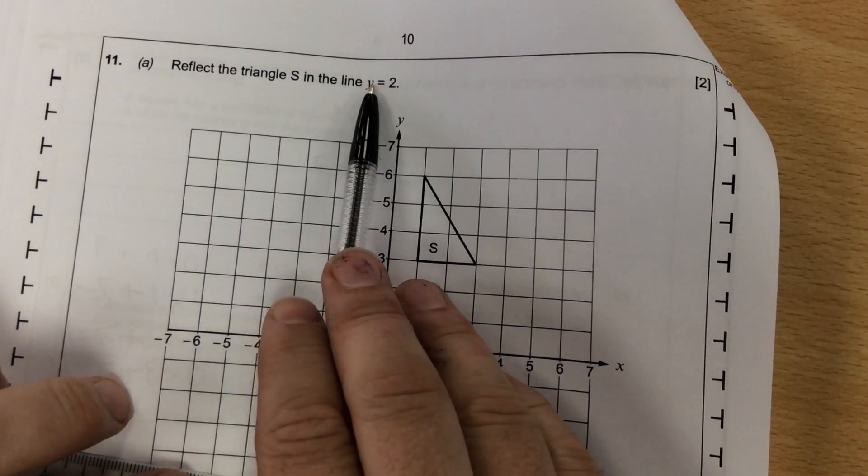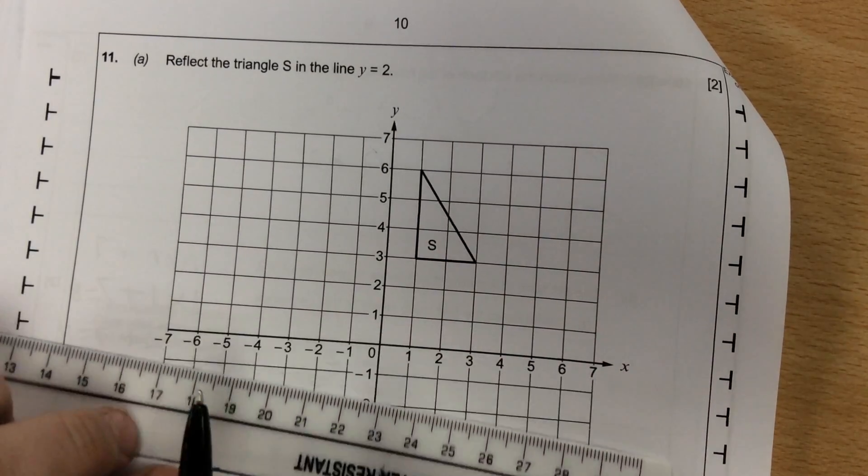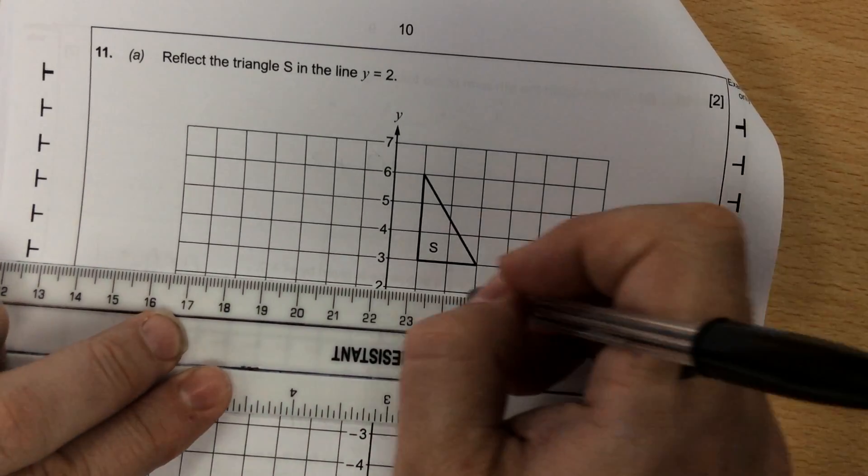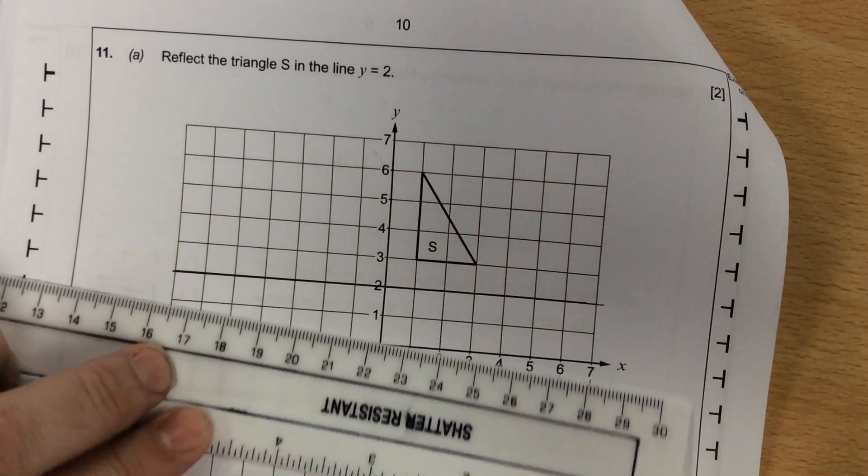First thing you need to do is draw the horizontal line y equals 2. So the horizontal line y equals 2 is a line that cuts through y at 2, and then that's going to be our mirror line.